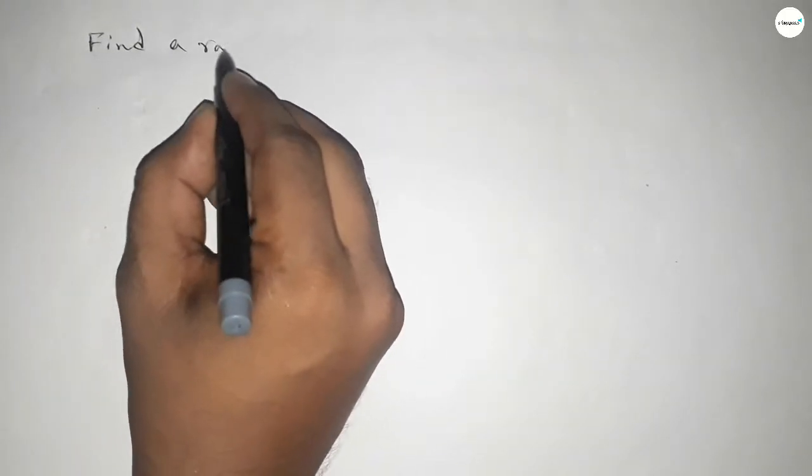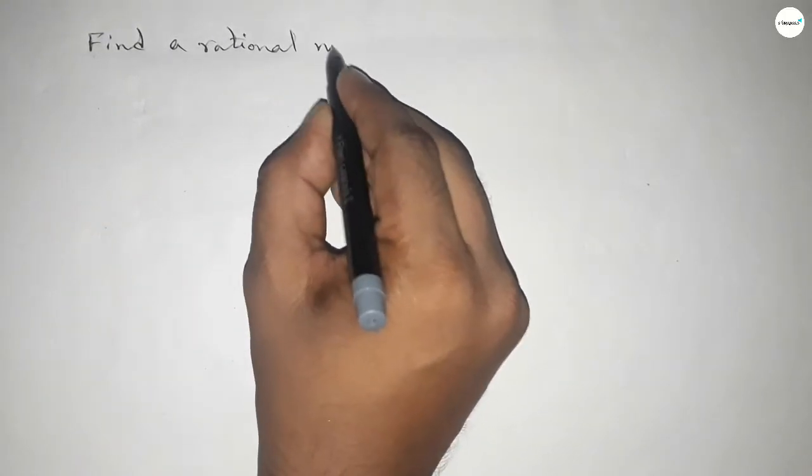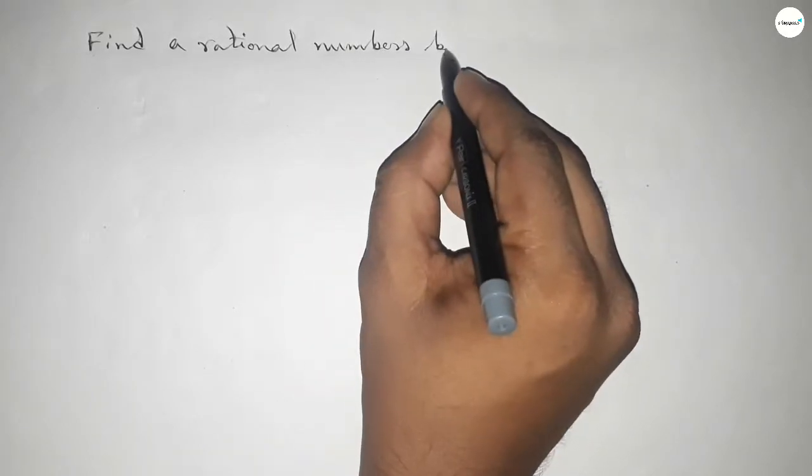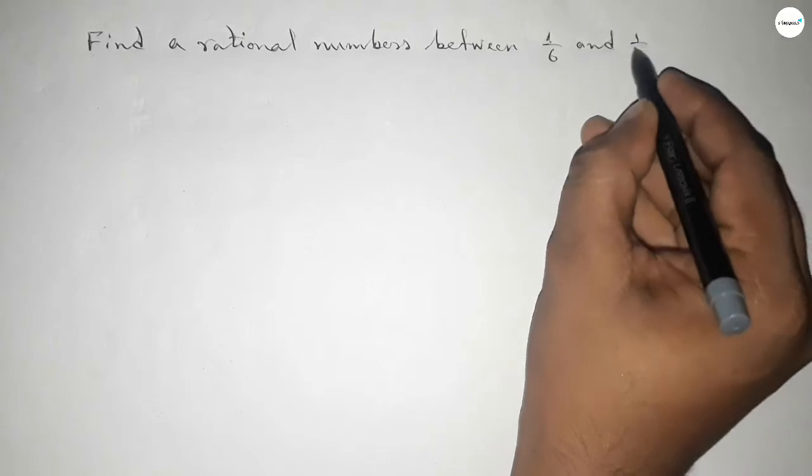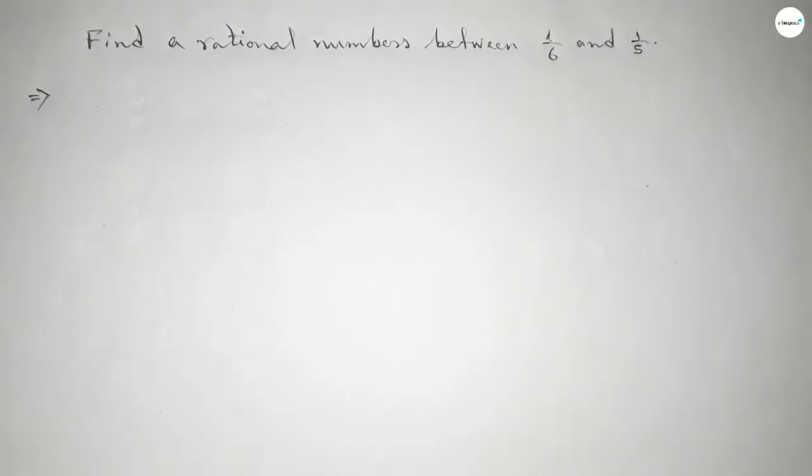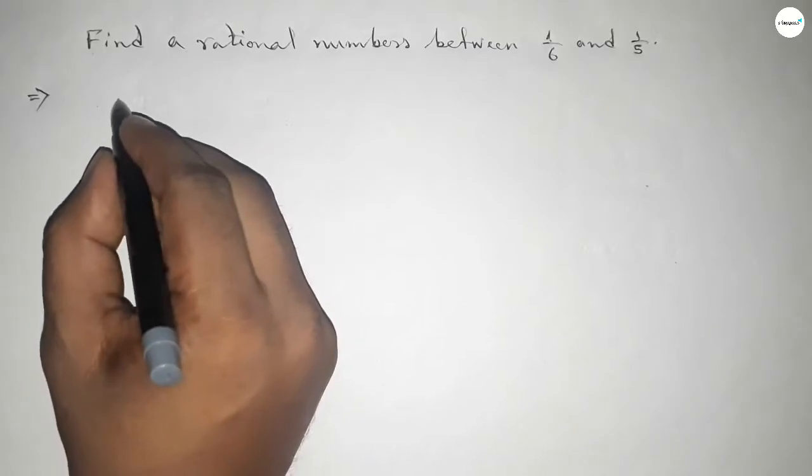Hi everyone, welcome to SSJ classes. Today in this video we have to find a rational number between 1/6 and 1/5. So let's start.